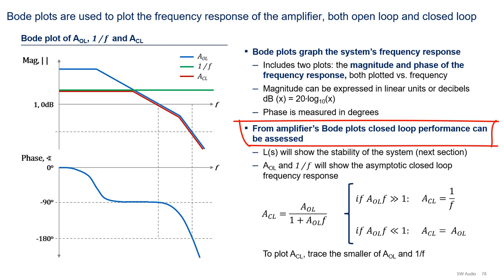For closed loop gain, we can use the following neat trick. Looking at Black's formula, when the loop gain is much greater than 1, the closed loop gain is 1 over f. When the loop gain is much less than 1, the closed loop gain is the open loop gain AOL. Therefore, if you plot both the open loop gain and 1 over f on the same Bode plot, you can obtain the closed loop gain frequency response by tracing the smaller of the open loop gain or 1 over f in the magnitude plot, as the red trace shows on the plot on the left.